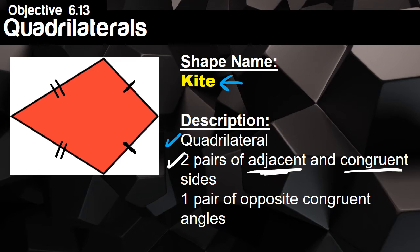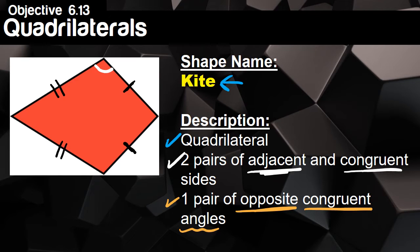The last part of the kite's description is that it has one pair of opposite congruent angles. We draw little arcs to mark angles. The angle at the top and the angle at the bottom — we draw one arc in both of those to show they are exactly the same. No matter if we squish the kite or make it bigger, these two angles are always going to be exactly the same.